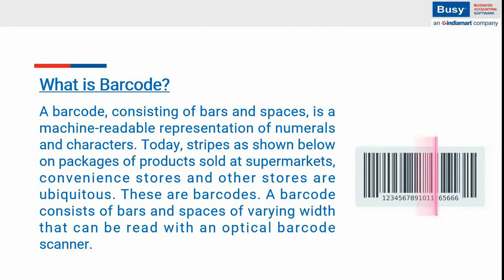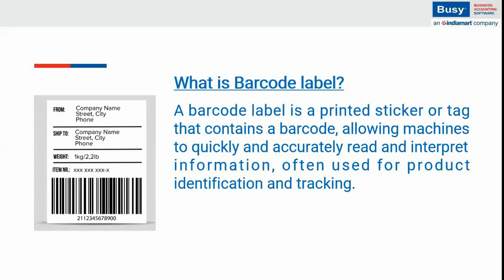A barcode is one type of unique identification value that helps to identify your product or inventory stock items in your software. In the next slide, let's discuss what a barcode label is. A barcode label is a printed sticker or tag that contains a barcode, allowing machines to quickly and accurately read and interpret information — often used for product identification and tracking. A barcode label contains various information like company address, item information, item rate, and the barcode value itself.